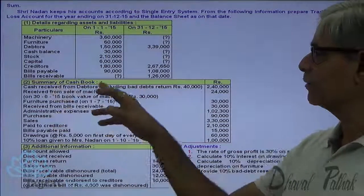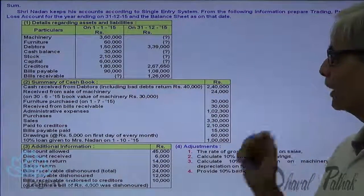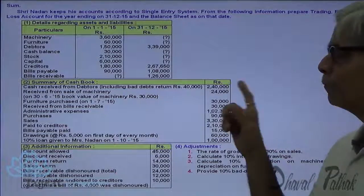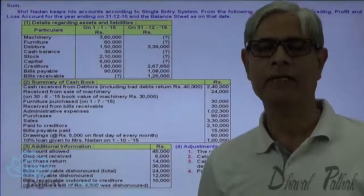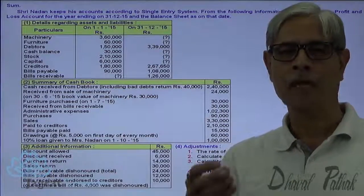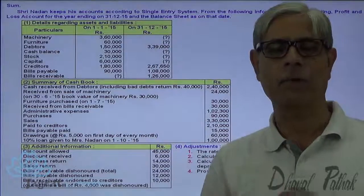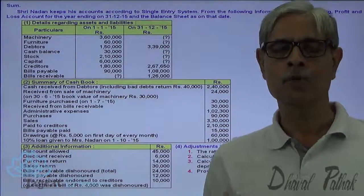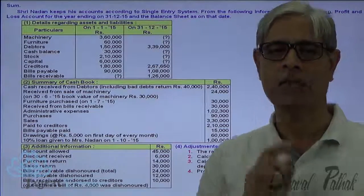Cash received from debtors, including bad debt recovery, is Rs. 2,40,000 in total. Out of that, bad debt recovery is Rs. 40,000. So, the amount collected from debtors is Rs. 2,00,000.